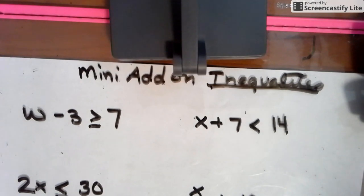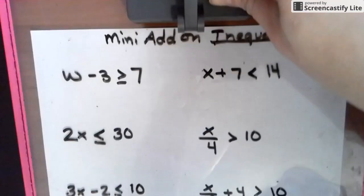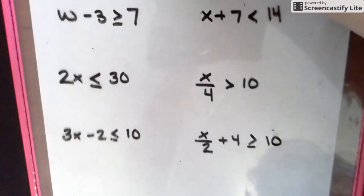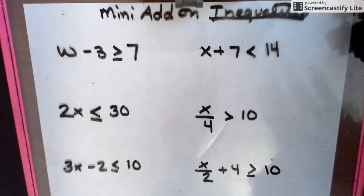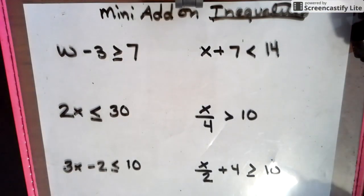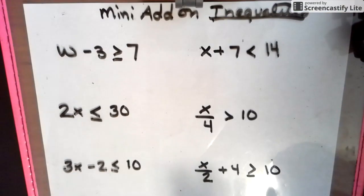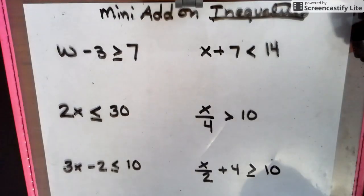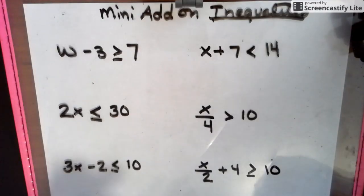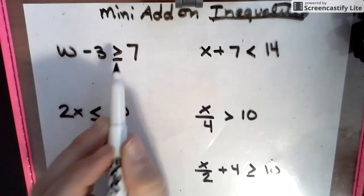All right, so this is a little mini add-on to inequalities, and this is just to show you how they're solved just like a single step or a two-step equation, except they have an inequality sign.